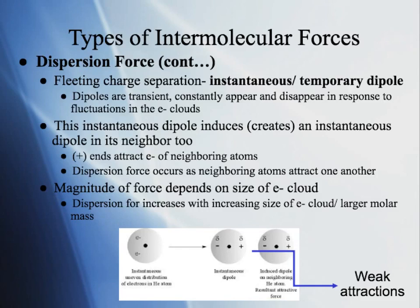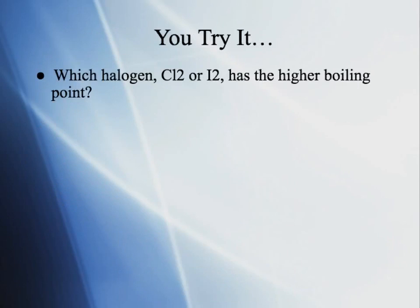Here's a type of question you may be asked: which halogen, chlorine or iodine, has the higher boiling point? We have to think about what that means — a high boiling point indicates a strong intermolecular force.